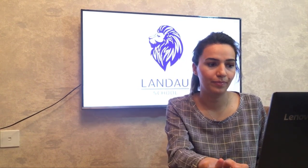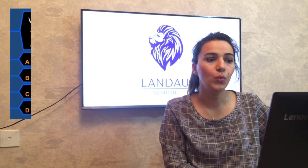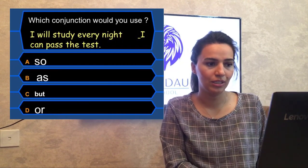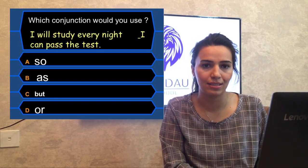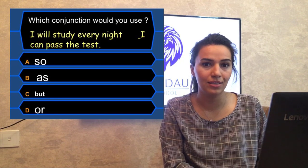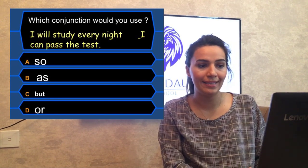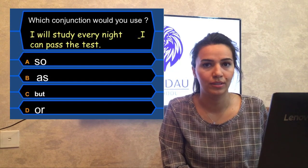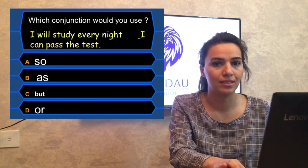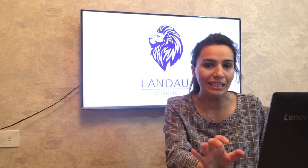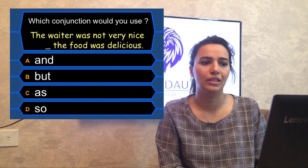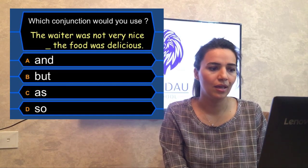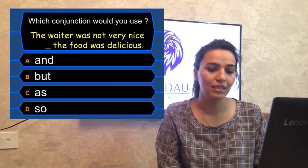Question three: which conjunction would you use? 'I will study every night __ I can pass the test.' The options are: so, as, but, or. Which one is correct? Another question: 'The waiter was not very nice __ the food was delicious.' Options: and, but, as, so. You have 30 seconds for each question.